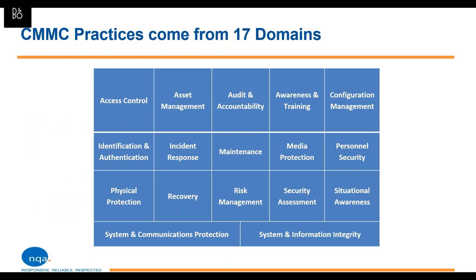The standard is divided into what are being called domains — for 27001 folks, think in terms of Annex A. There are 17 domains, and each practice or control falls under one of them. Various domains have more or less practices, and each domain may or may not have practices at the different maturity levels. A lot of these domains are IT-centric: access control talks about how people access the IT system; asset management talks about IT assets — hardware, software.